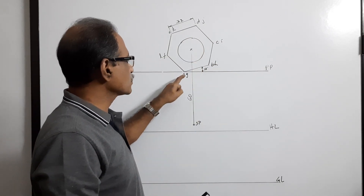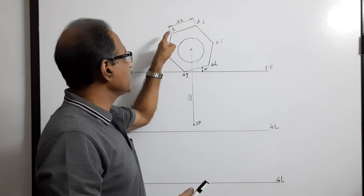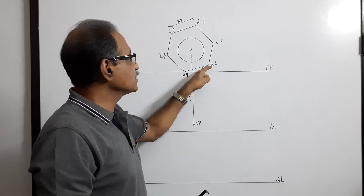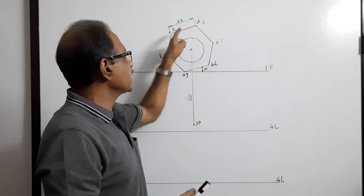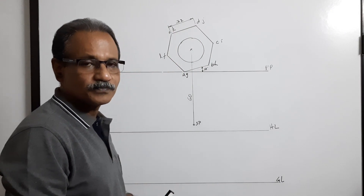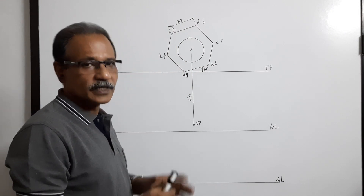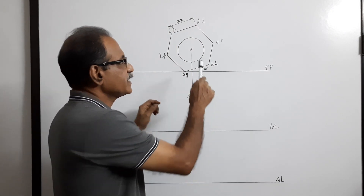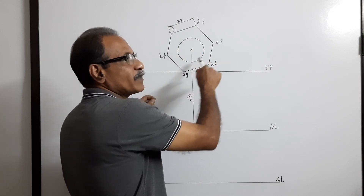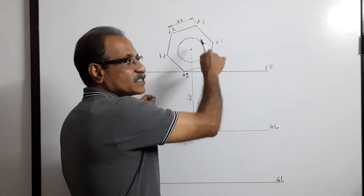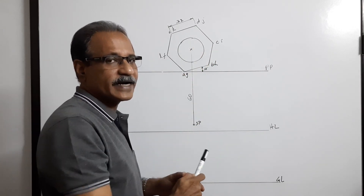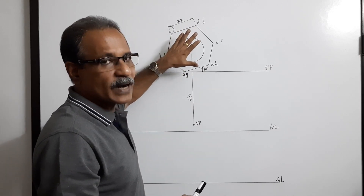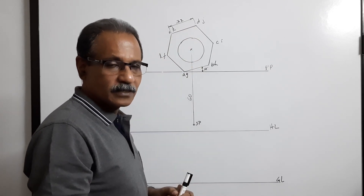The hexagonal prism has got points A, B, C, D, E, F on the base and G, H, I, J, K, L on the top. I find the center and draw a circle of 32 mm diameter — 16 mm radius — that completes the plan of the nut.